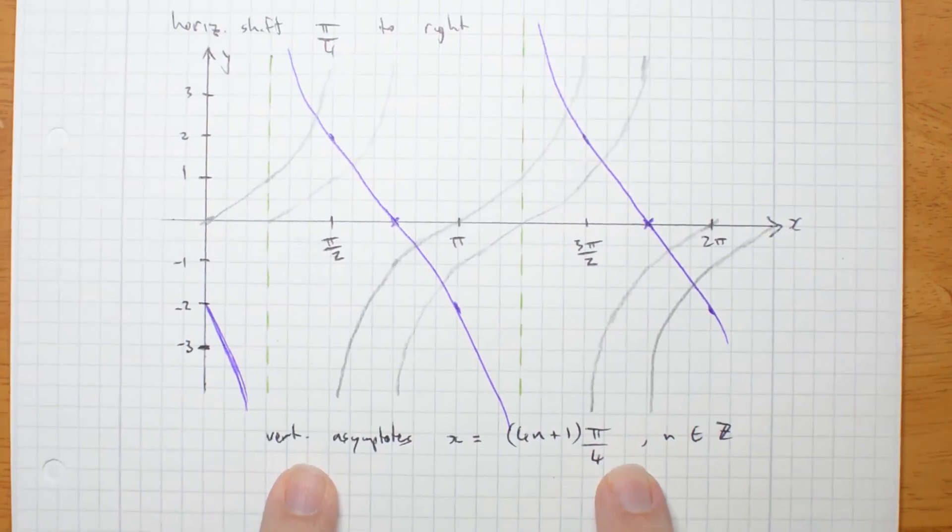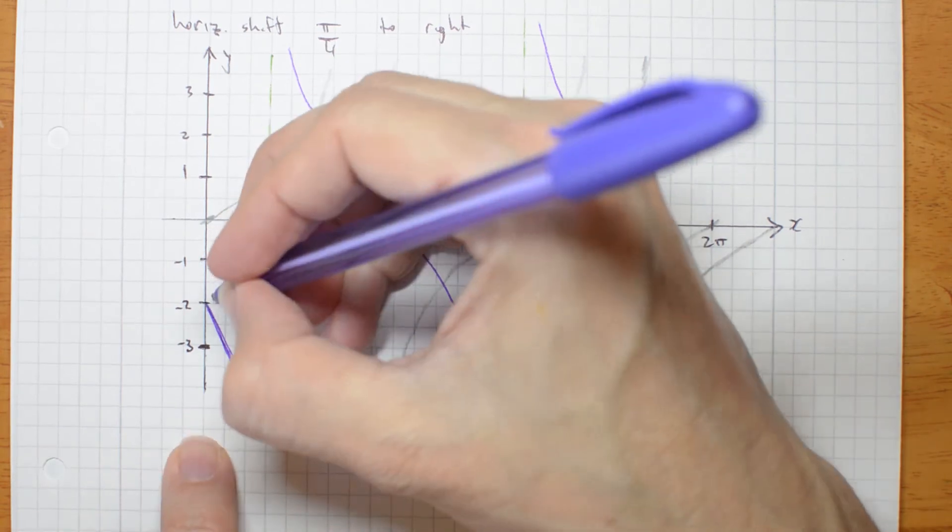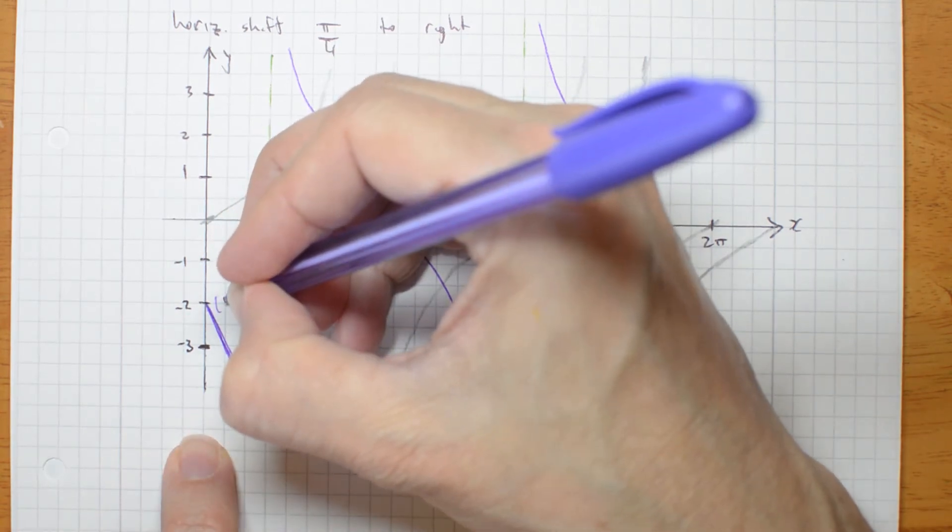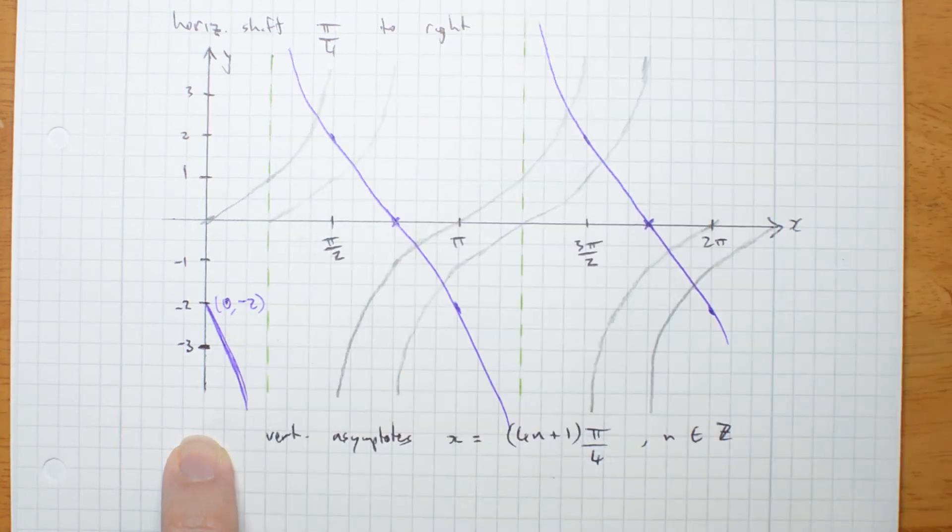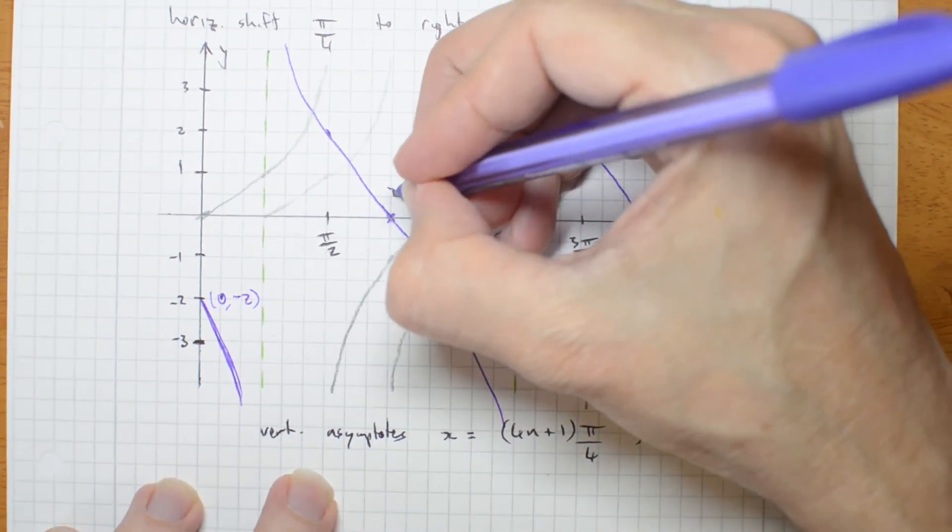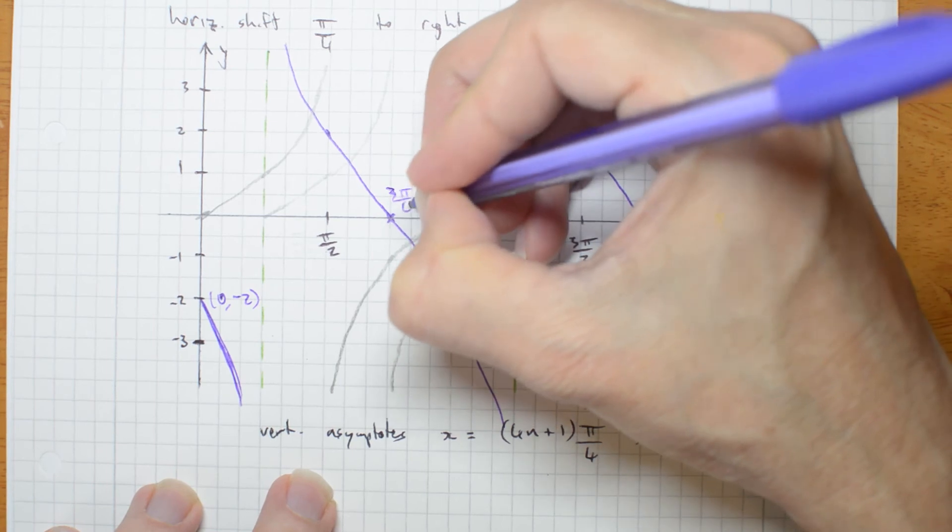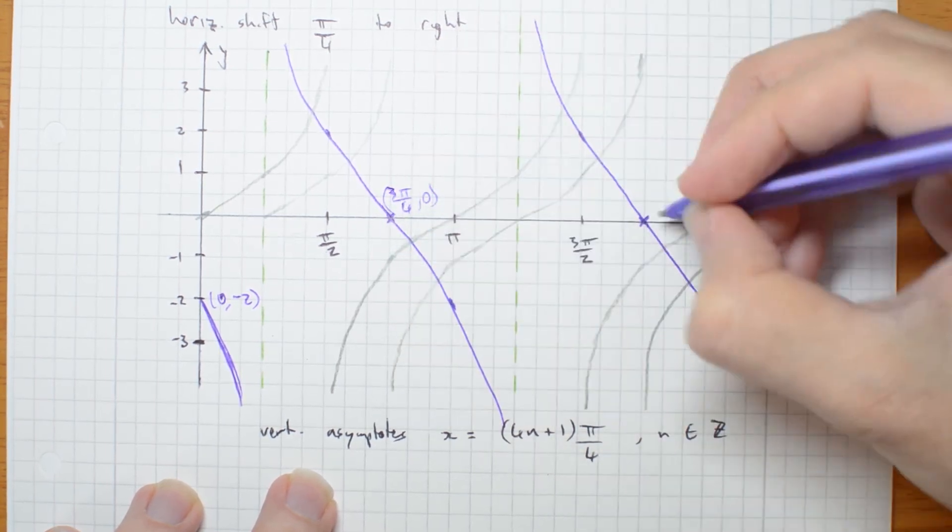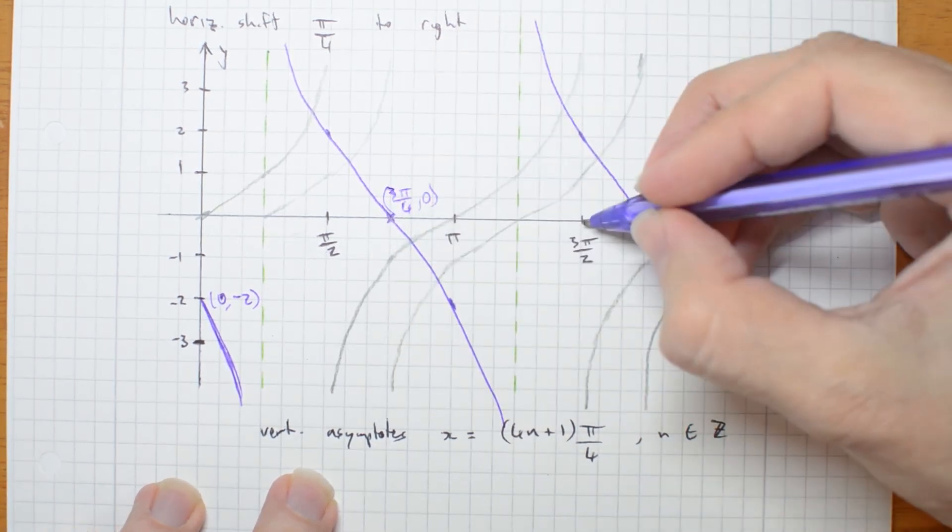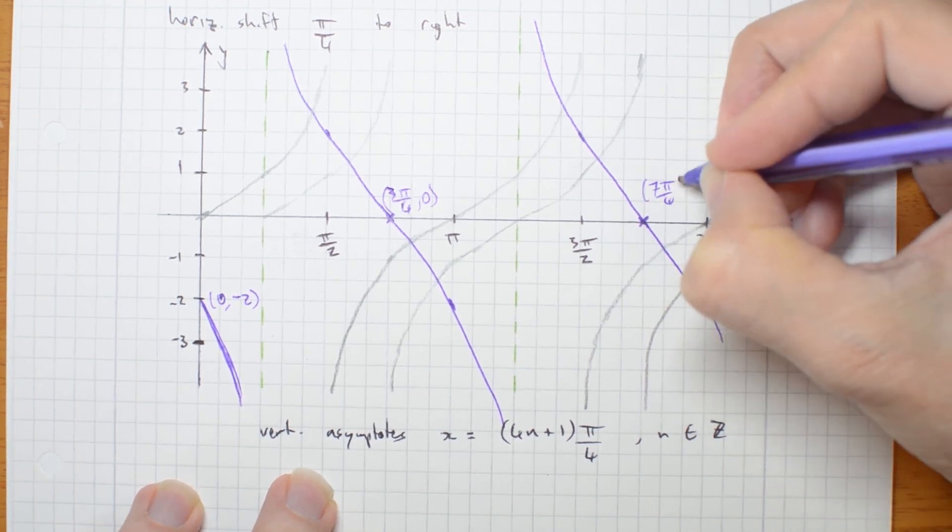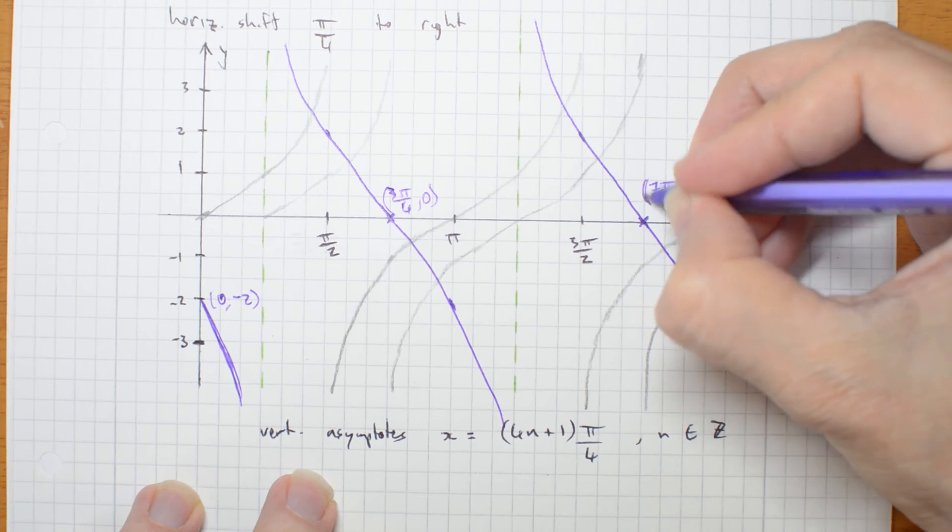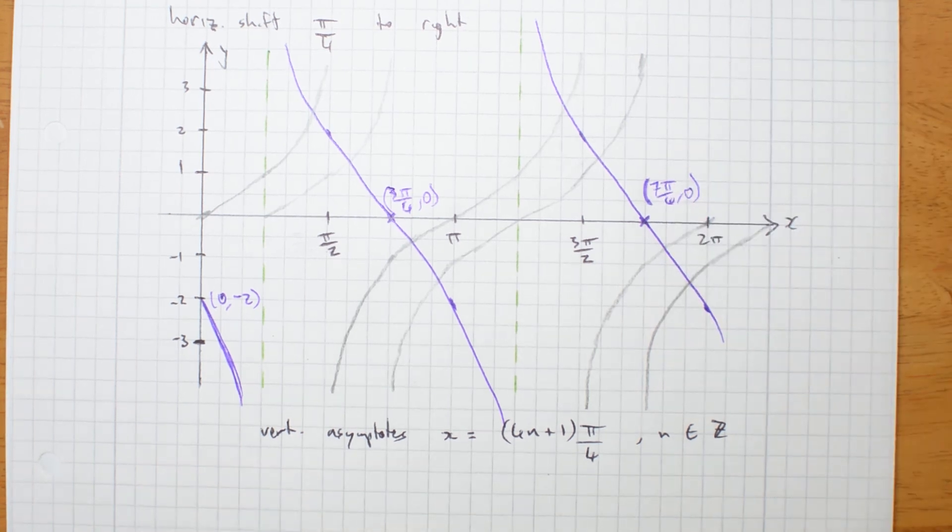I've labelled my asymptotes. I also need to label this point. Was 0, negative 2. Y intercept. And it crosses here at 3 pi on 4. And again. That's 6. So that's 7 pi on 4. Those are the x-intercepts.